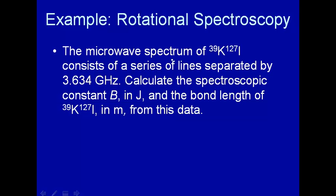Here we have the microwave spectrum of potassium iodide, and note that you have to give the isotope number because the reduced mass will depend upon what isotope you have. So we have potassium 39, I-127, in the gas phase. The spectrum consists of a series of equally spaced lines separated by 3.634 gigahertz. Calculate the spectroscopic constant B in joule and the bond length in meters from this data.